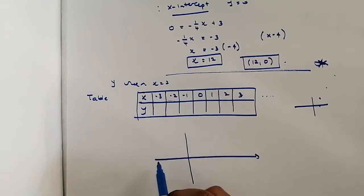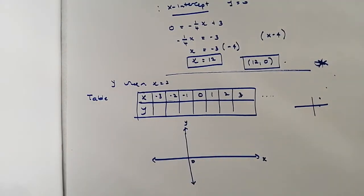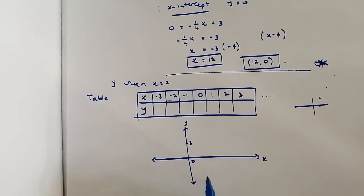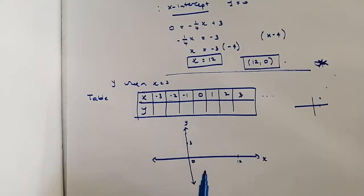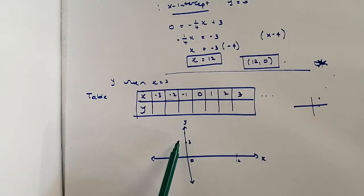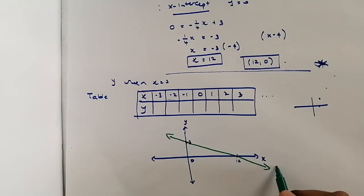So our graph is going to look something like this. Since the slope is -1/4, the function will be relatively gentle — not very steep. The y-intercept is at 3 and the x-intercept is at 12. We mark those points, number the axis from 1 up to 12, and then join the two intercept points to get the line y = -1/4 x + 3.